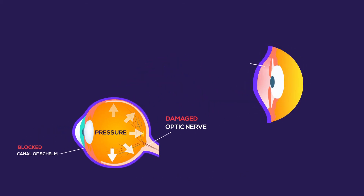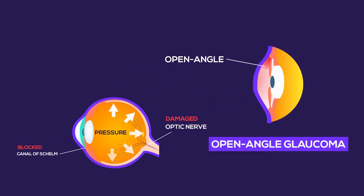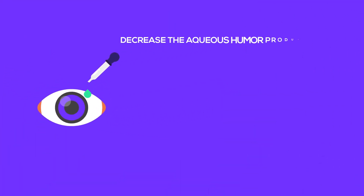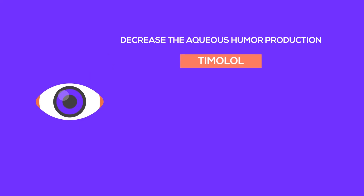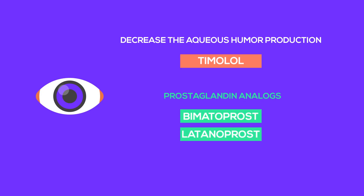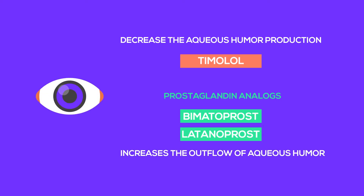Diabetes increases the risk of developing a type of glaucoma called open-angle glaucoma. It can be treated with eye drops that decrease aqueous humor production, such as timolol, which is a beta blocker, or using prostaglandin analogs, such as bimatoprost or latanoprost, which increases the outflow of aqueous humor.